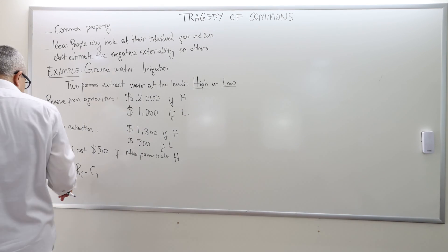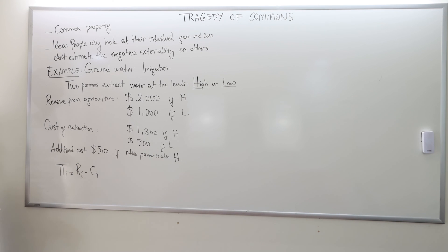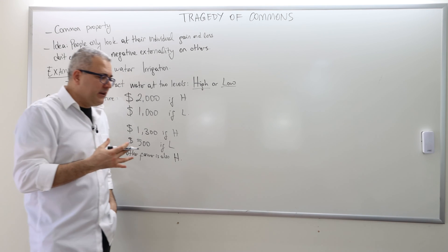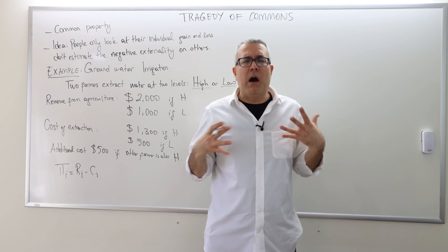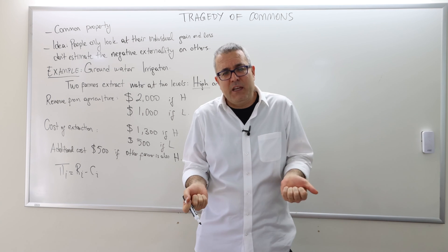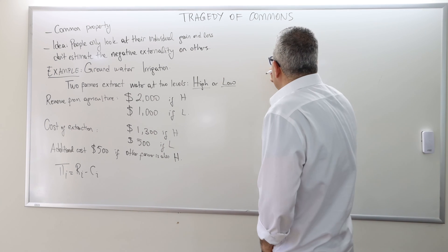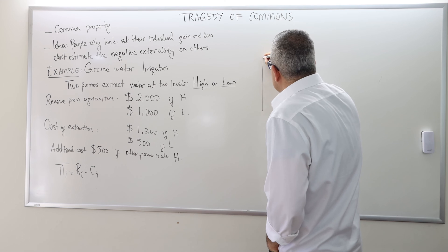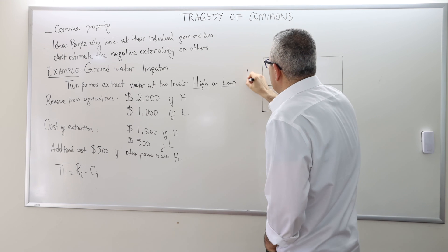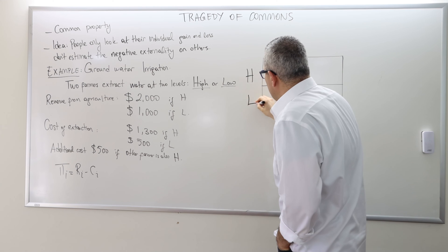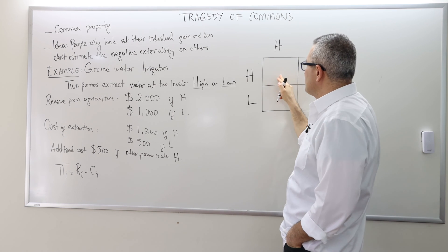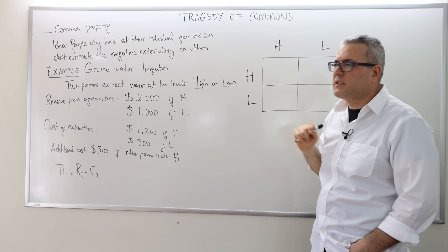Each farmer is trying to maximize his own profit, and profit is as usual revenue minus cost. Let's model this as a simultaneous move game, where both farmers choose the amount of water to extract simultaneously. We can represent this as a payoff matrix where H represents high and L represents low. Player one is the row player, player two is the column player. The first number corresponds to farmer one, the second to farmer two.